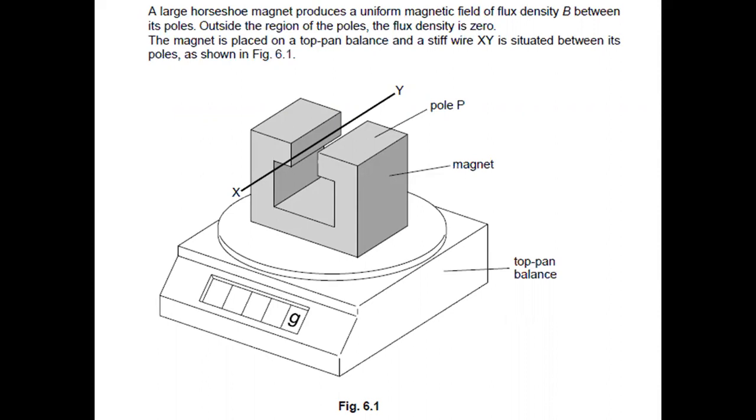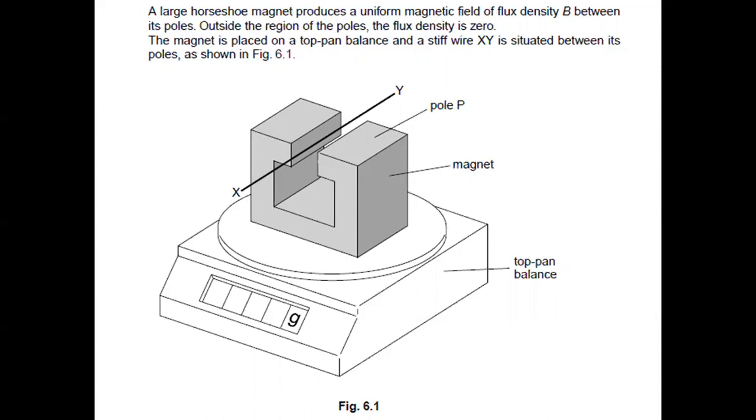The magnet is placed on a top pan balance and a stiff wire XY is situated between its poles. The wire XY is horizontal and normal to the magnetic field. The length of wire between the poles is 4.4 centimeters. A direct current of magnitude 2.6 amperes is passed through the wire in the direction from X to Y.